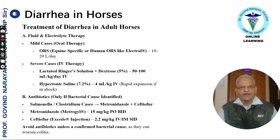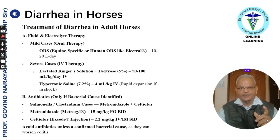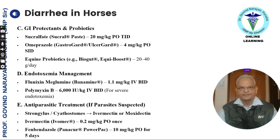For diarrhea in adult horses, fluid and electrolyte therapy is suggested. Mild cases can use oral therapy; severe cases should receive lactated Ringer's solution 50 to 100 ml per kg per day IV, and hypertonic saline 7.2% at 4 ml per kg IV if rapid volume expansion is needed in shock. For Clostridium cases, use metronidazole 15 mg per kg and ceftiofur 2.2 mg per kg IV or IM. Avoid antibiotics unless a confirmed bacterial cause, as they can worsen colitis in horses.